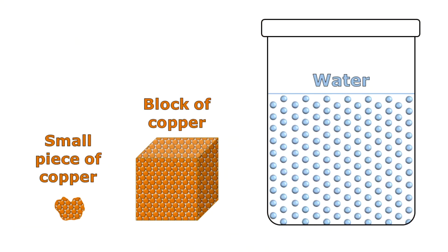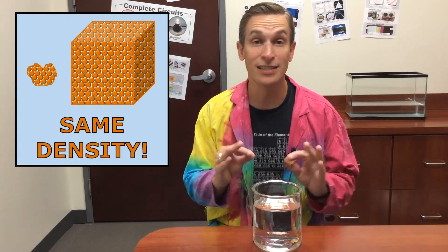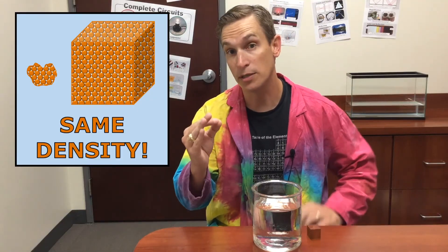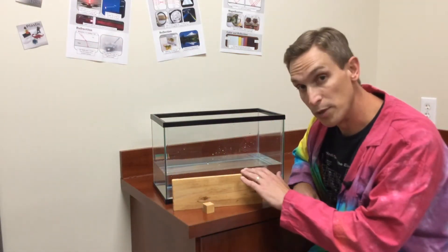Our block of copper sank in water, but here I have a small piece of copper that has much less mass than the block. Will this small piece of copper sink or float? It's important to understand that objects sink or float because of their density, not their mass. Copper is more dense than water, and even though the small piece of copper has less mass, its particles are just as close together. The block of copper and the small piece of copper have the same density, so because this small piece of copper is still more dense than the water, it sinks.